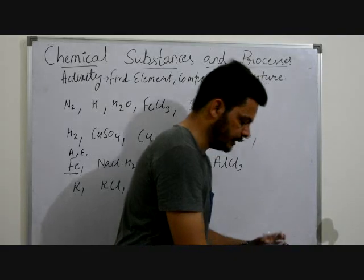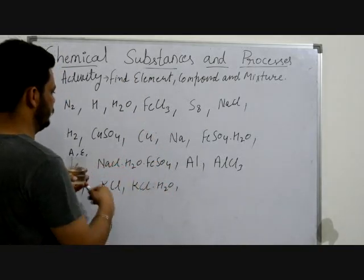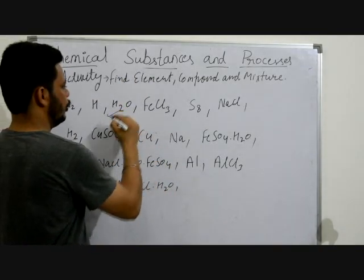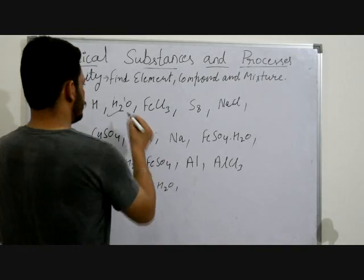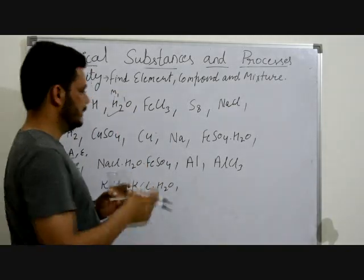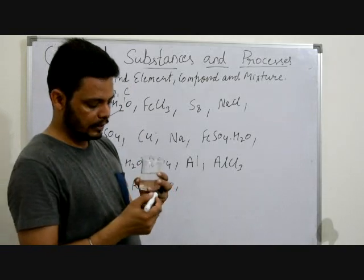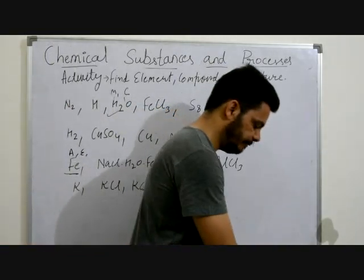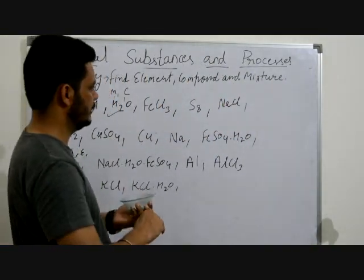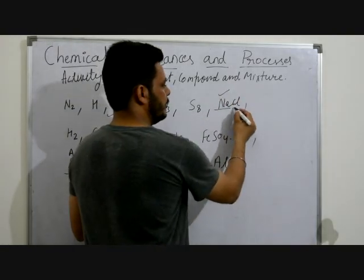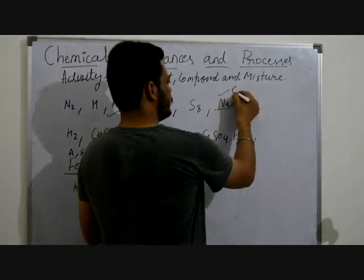Now if I have water, H2O — it has two kinds of atoms: hydrogen and oxygen. They are different atoms in a fixed ratio, so water is a compound. It is also a molecule. NaCl has sodium and chlorine — two different atoms in a fixed ratio — so NaCl is a compound and also a molecule.